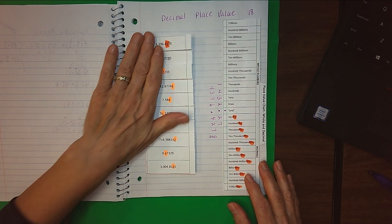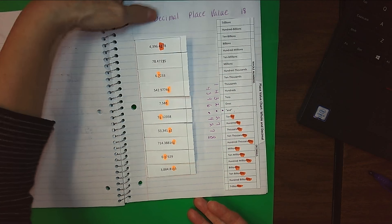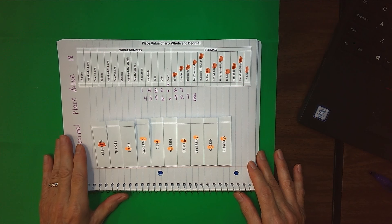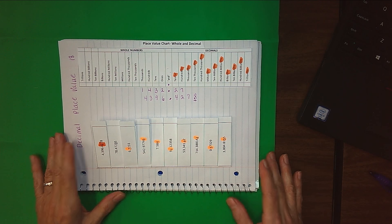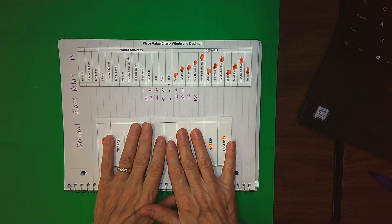We're going to talk about decimal place value today. Just a little review about decimals. I think the most practical application of decimals for us is money. We use decimals in money all the time to talk about parts less than a whole dollar.